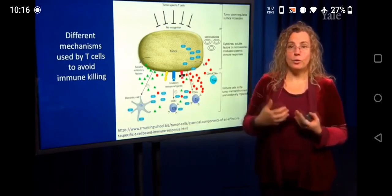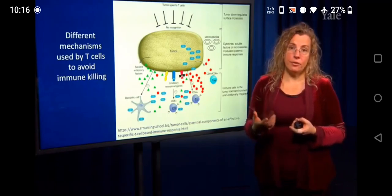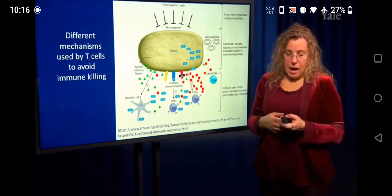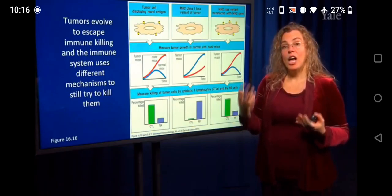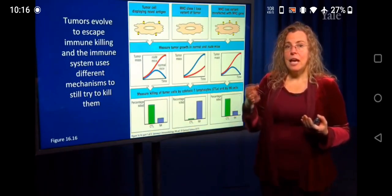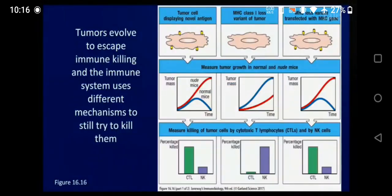I also wanted to bring up the difference between cytotoxic T cells and NK cells, both of whom can help to eliminate tumors. If you've got a tumor cell expressing a mutated, now foreign peptide on MHC, cytotoxic T cells are going to do most of the work. Nude mice are laboratory mice that had a natural mutation causing them to have no hair, but it also caused them to have no T cells. So if they don't have T cells, they cannot eliminate the tumor.